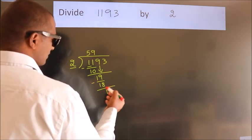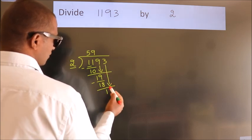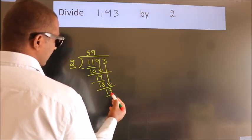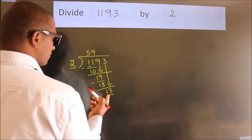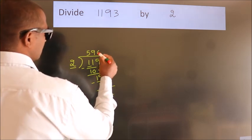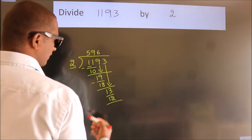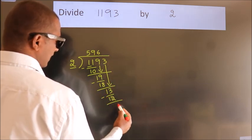After this, bring down the next number. So 3 down, giving us 13. A number close to 13 in the 2 table is 2 times 6 is 12. Now we subtract. We get 1.